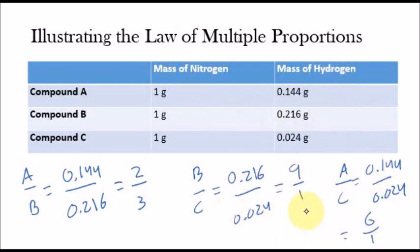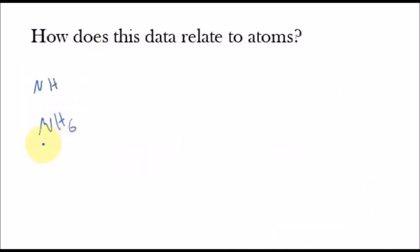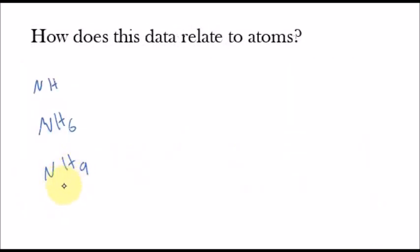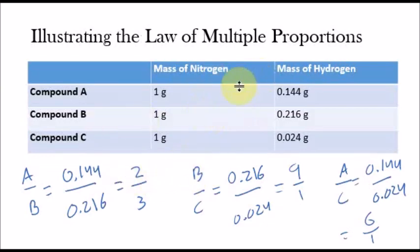Similarly, the ratio of B to C is 9 to 1, so we can say compound B has the formula NH9 — 9 times as much hydrogen as compound C. For every 1 gram of nitrogen in compound B, we're going to have 9 times as much hydrogen. This explains why compound B has 9 times as much hydrogen as compound C when you have 1 gram of nitrogen for each.